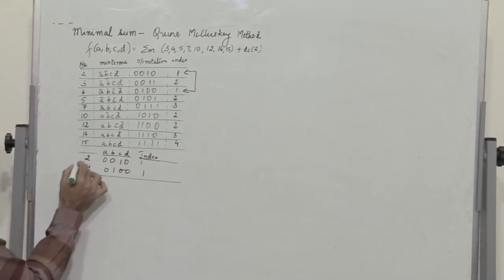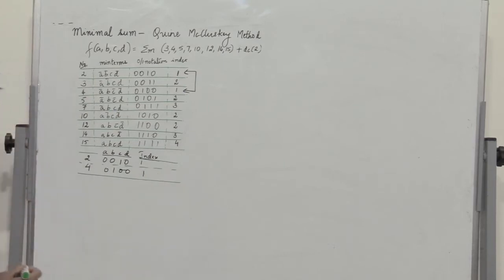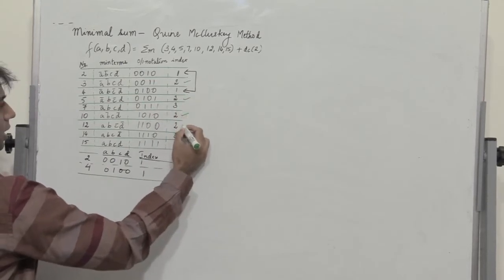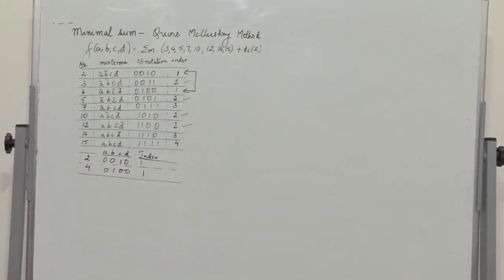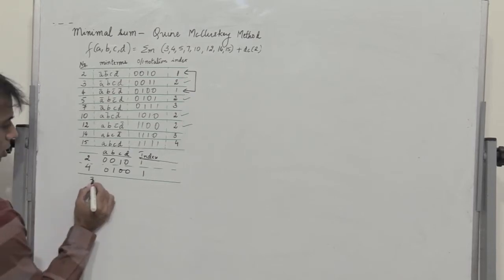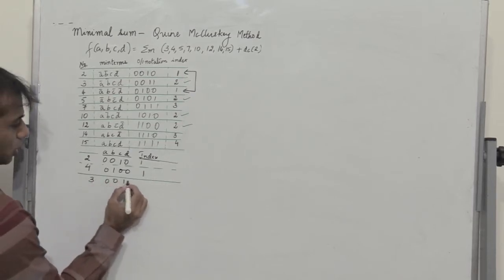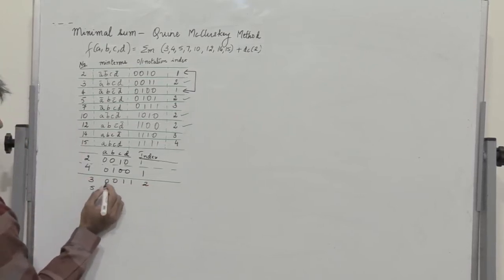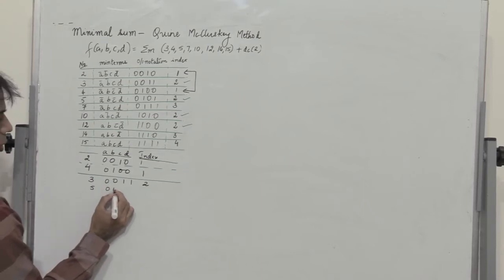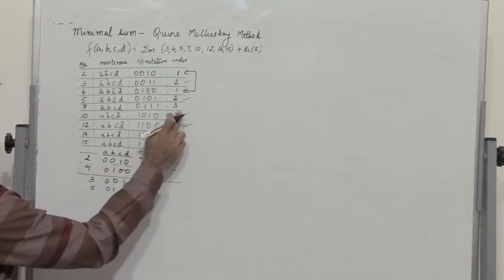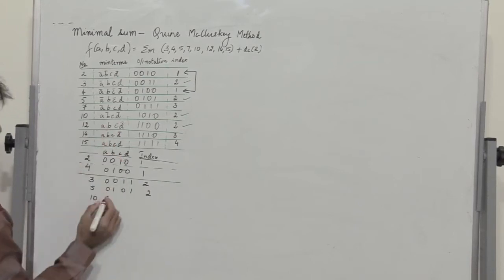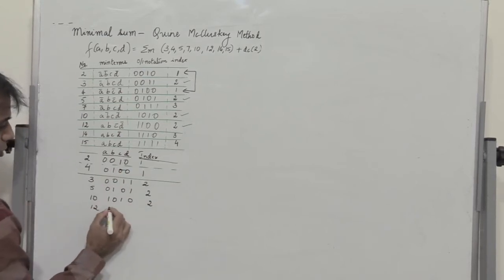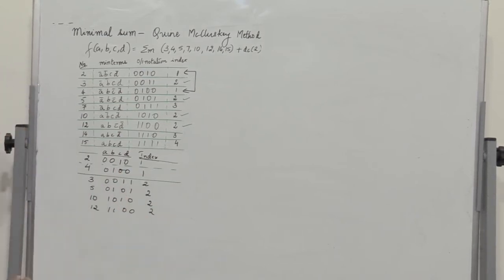Next I choose the combinations where I have an index of 2. I have an index 2 for 3, 5, 10, and 12. So I have 3 which is 0011, index 2; and then 5 where the binary notation is 0101, index 2 again; and then 10 which is 1010, index 2; and then 12 which is 1100, index 2.